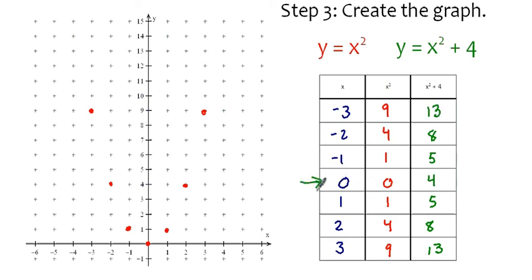So we'll want to plot the ordered pairs (0, 4), which is here. (1, 5), which is here. (2, 8), and (3, 13).